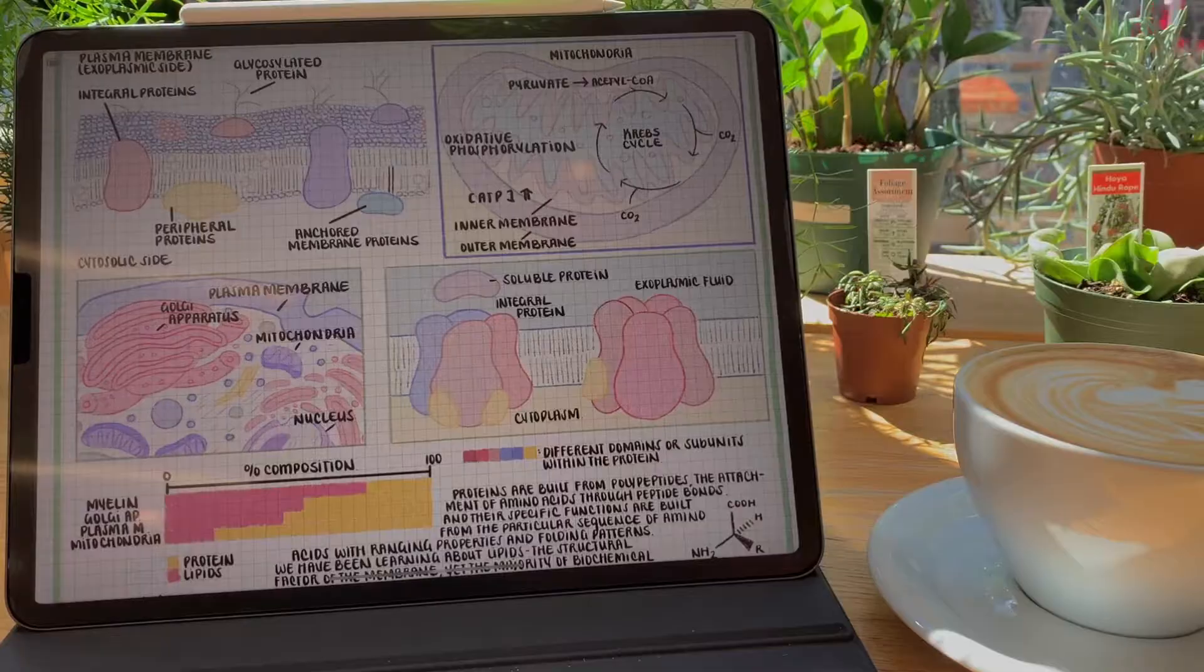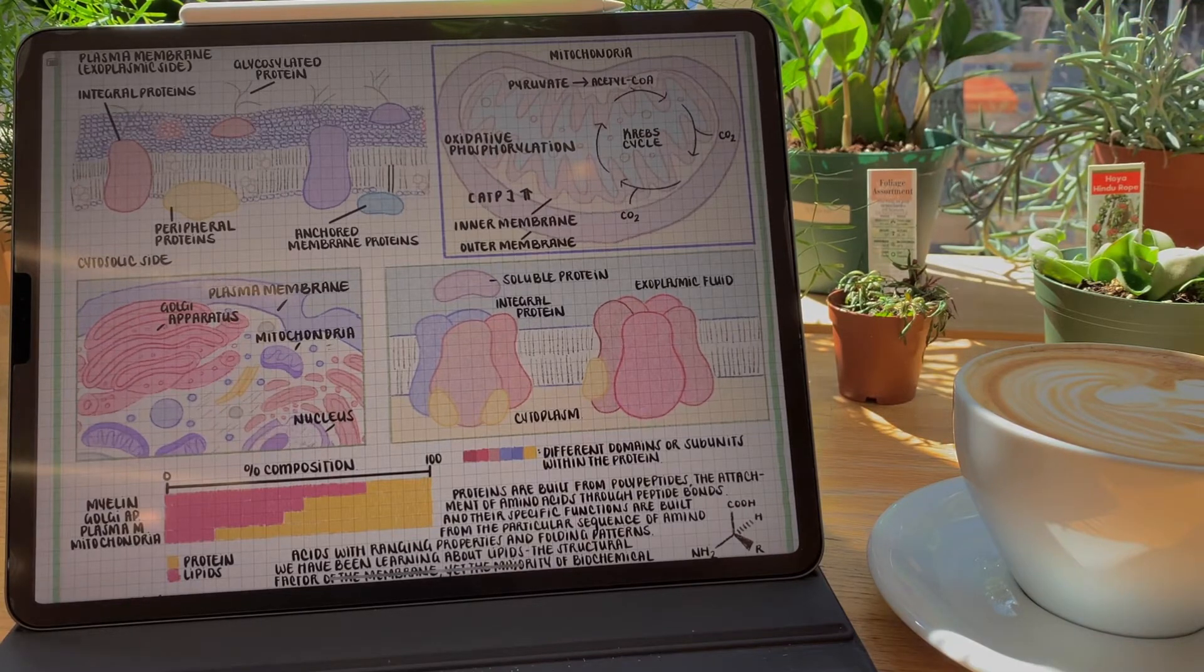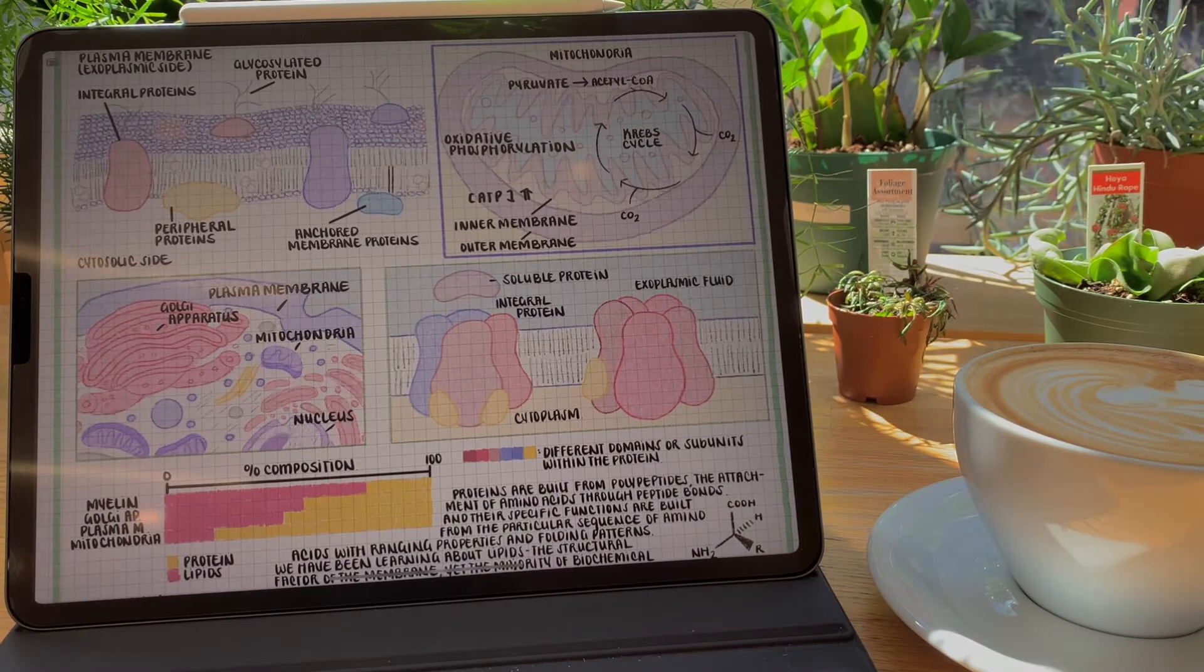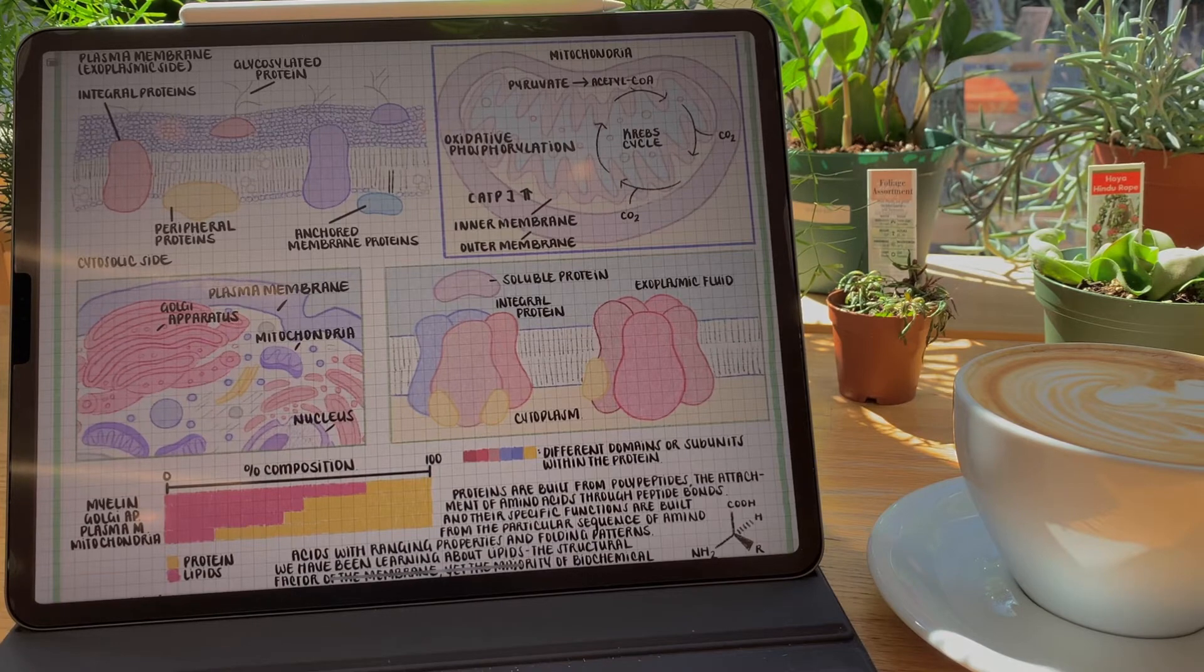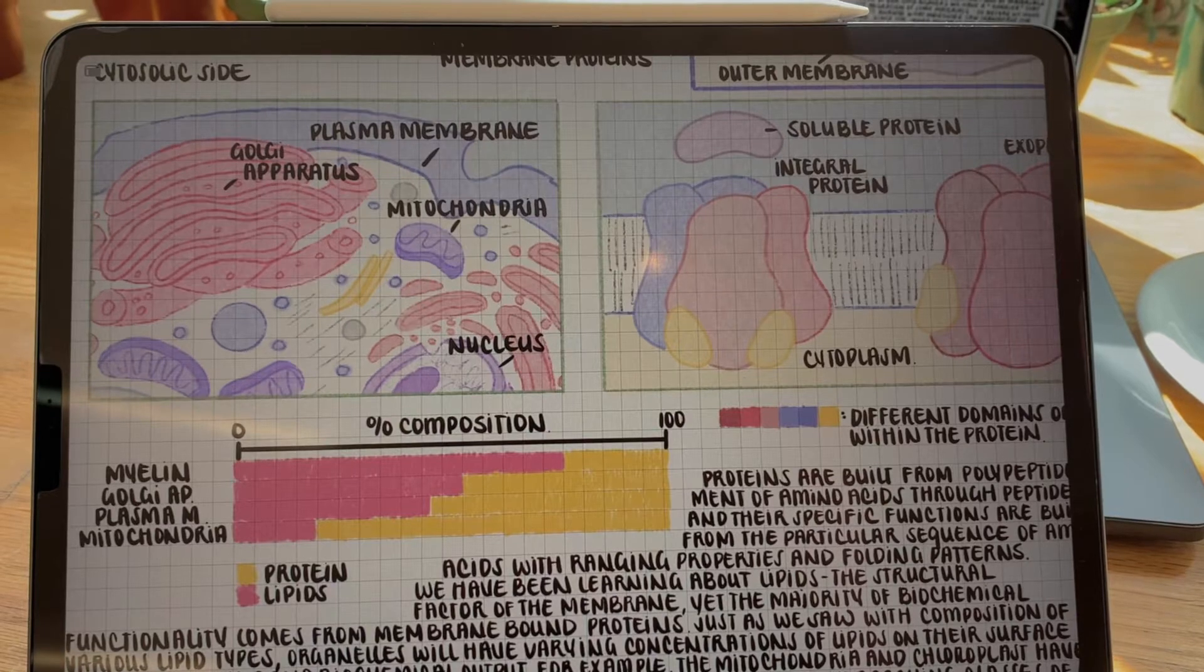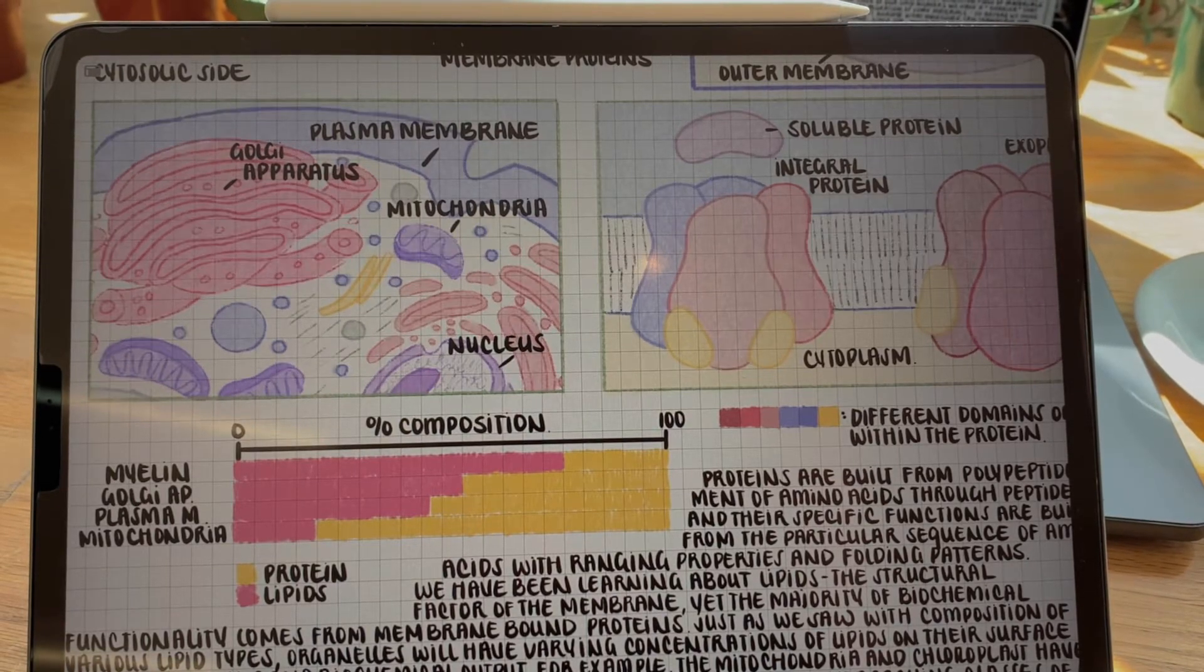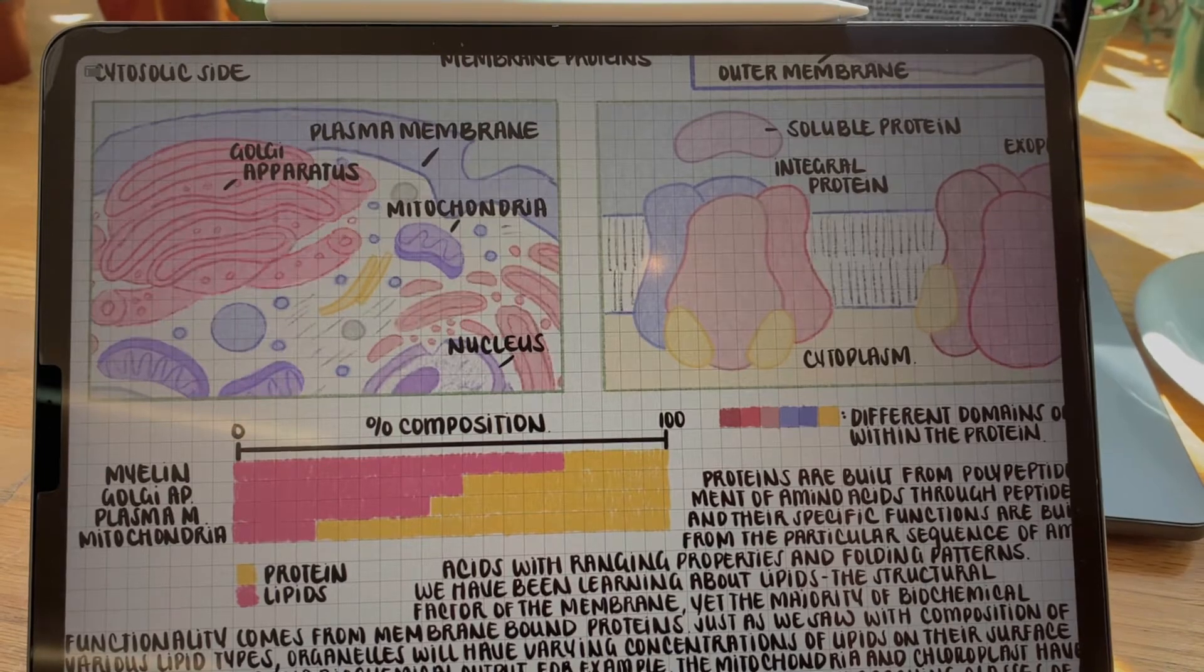And just like how we saw that throughout the cell there are varying concentrations of lipid types depending on certain requirements, we can also analyze varying protein compositions of membranes throughout different locations in the cell. For example, the plasma membrane has roughly 50% composition of proteins and lipids within the membrane.